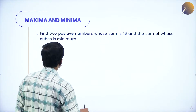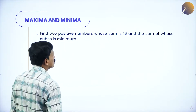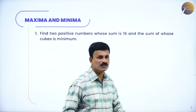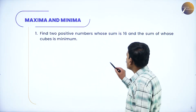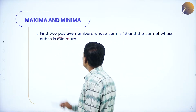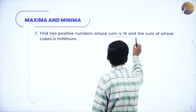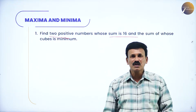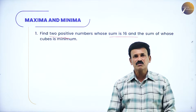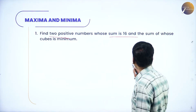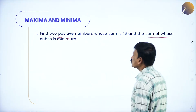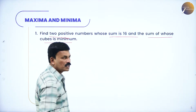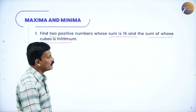The first problem: Find two positive numbers whose sum is 16 and the sum of whose cubes is minimum. We should find two positive numbers whose sum is 16, and if you cube those two numbers, the sum of the cubes is minimum.